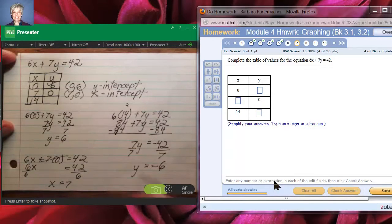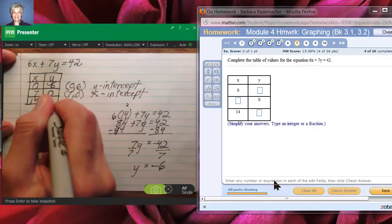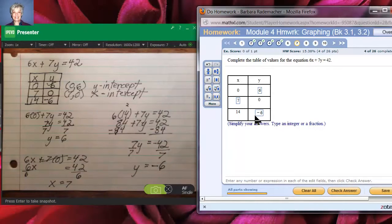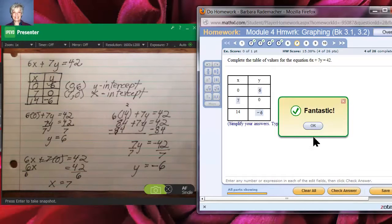So if x is 14, y is negative 6. Now let's put these numbers in. If x is 0, y is 6. If y is 0, x is 7. And if x is 14, y equals negative 6. Let's see if that's right. Yes, it is.